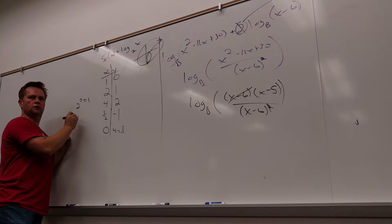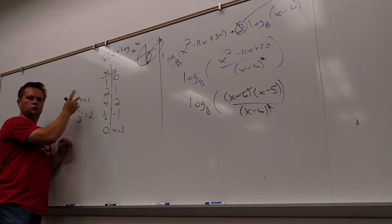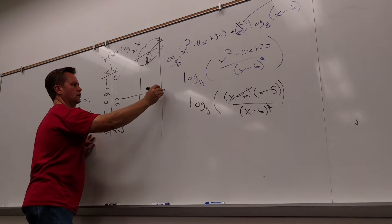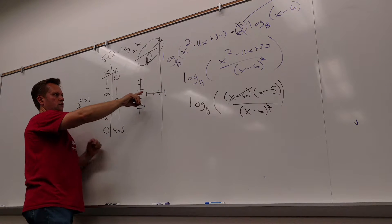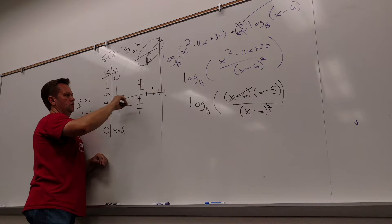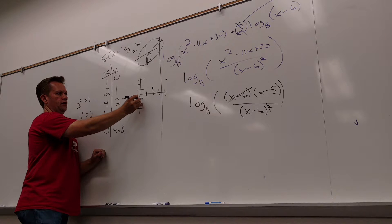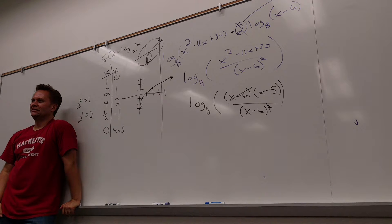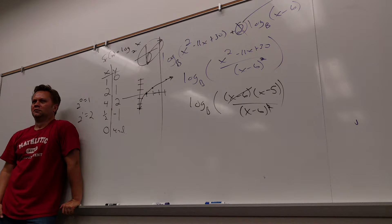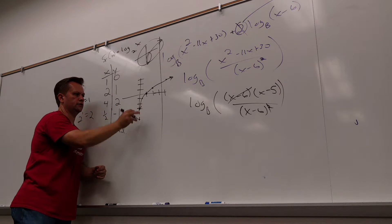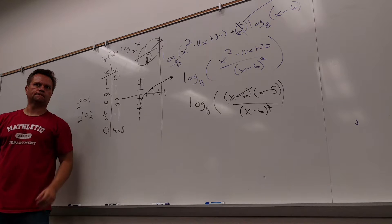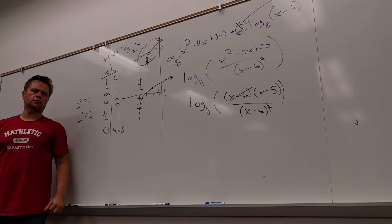1 and 0 seem interchangeable but they're desperately not. 2 to the 0 is 1, and 2 to the 1 is 2. When I go to graph this: 1 gives 0, 2 gives 1, 4 gives 2, and 1 half gives negative 1. Be really careful to make it clear that the y-axis is the asymptote — don't cross it. You pick powers of the base to get nice whole numbers.